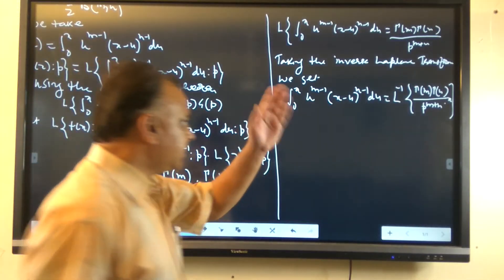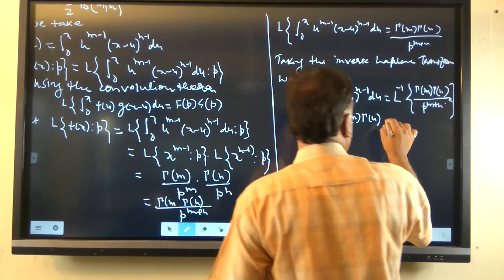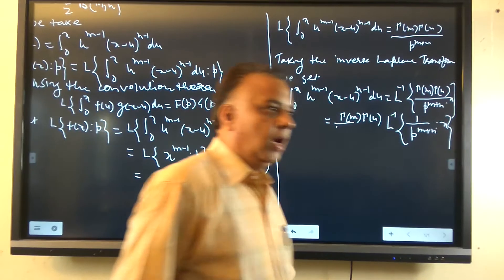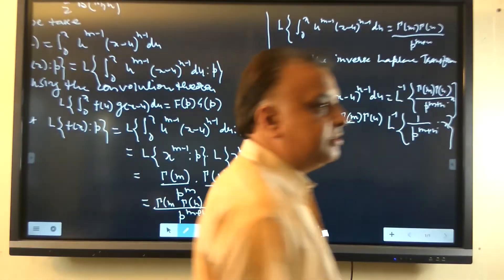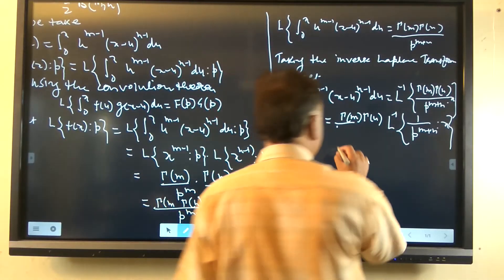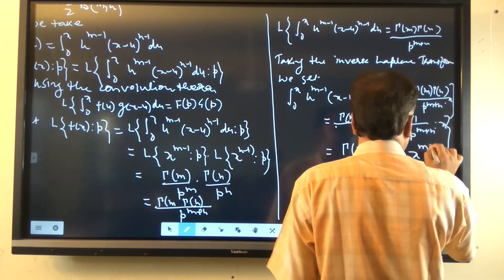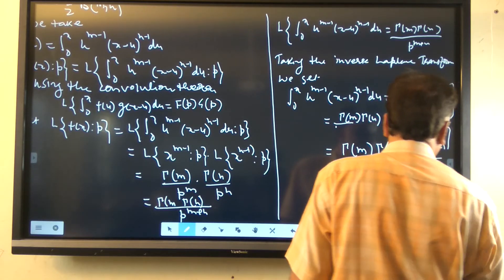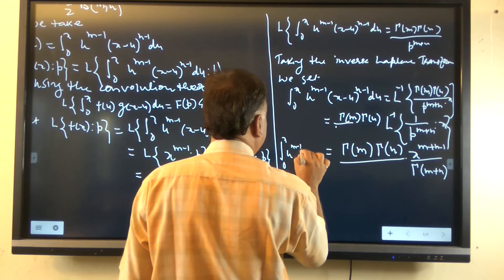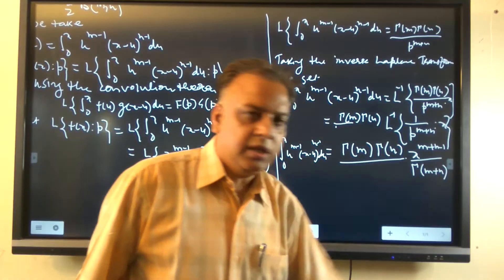The right-hand side becomes: gamma(m) times gamma(n) is outside, times the inverse Laplace transformation of 1 upon p^(m+n). Now, the inverse Laplace transformation of 1 upon p^(m+n) equals x^(m+n-1) upon gamma(m+n). So the value of this integral, in terms of the gamma function, is gamma(m) times gamma(n) times x^(m+n-1) upon gamma(m+n).